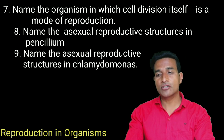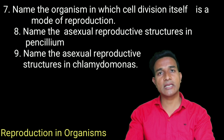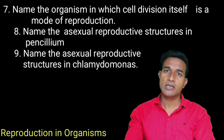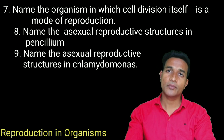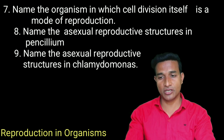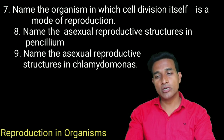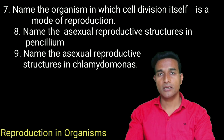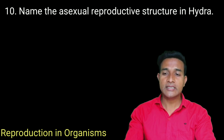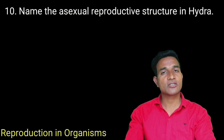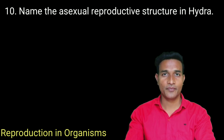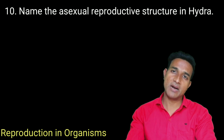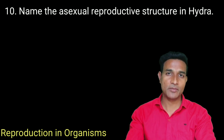Name the asexual reproductive structures in Penicillium. In Penicillium, that is fungi, conidia is the asexual reproductive structure. Name the asexual reproductive structure in Chlamydomonas. It is zoospores. Name the asexual reproductive structure in Hydra. In Hydra, we have budding as well as fragmentation.